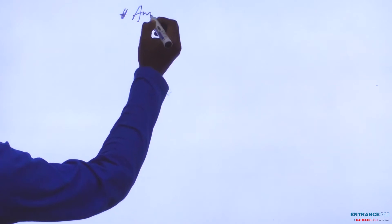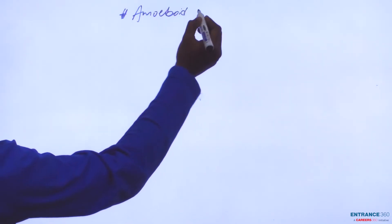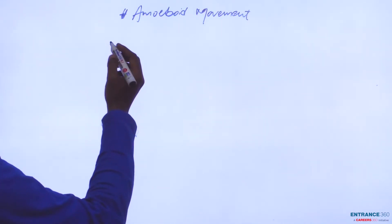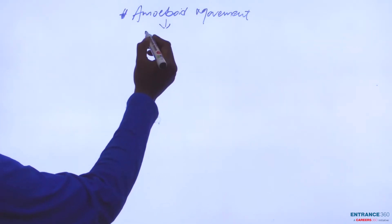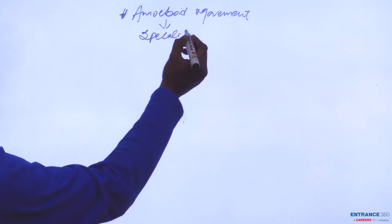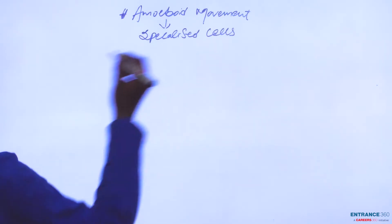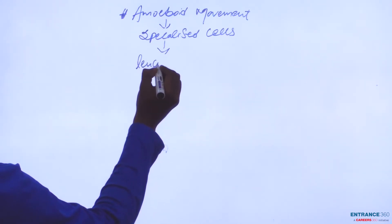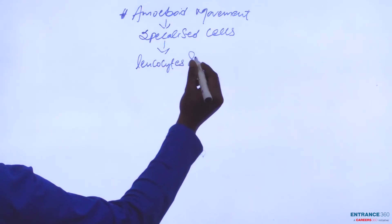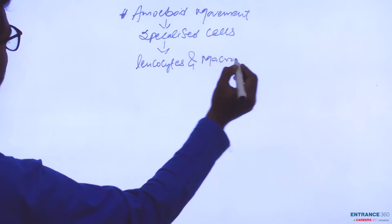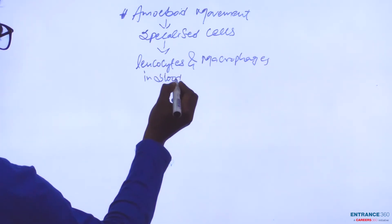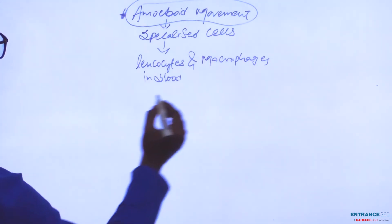As we know, amoeboid movement is basically carried out through specialized cells. These specialized cells include, for example, leukocytes and macrophages, which are present in blood and exhibit amoeboid movement.